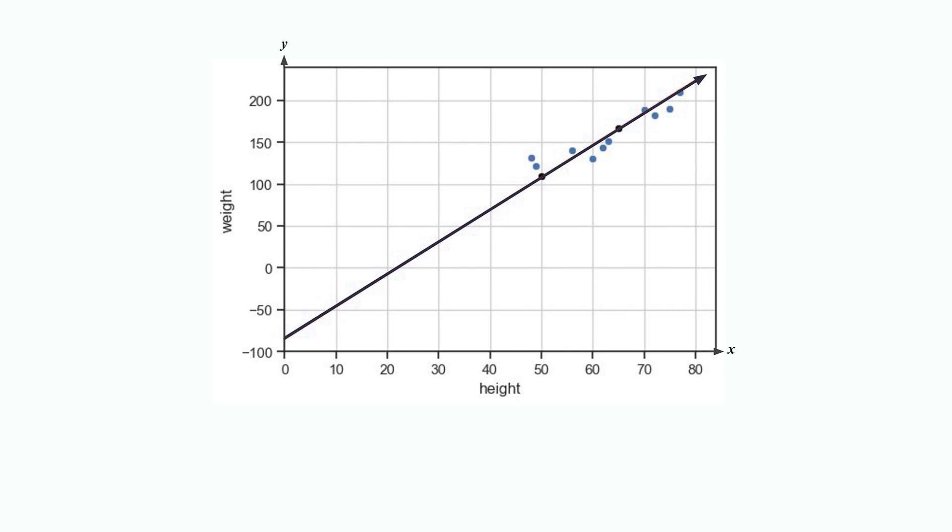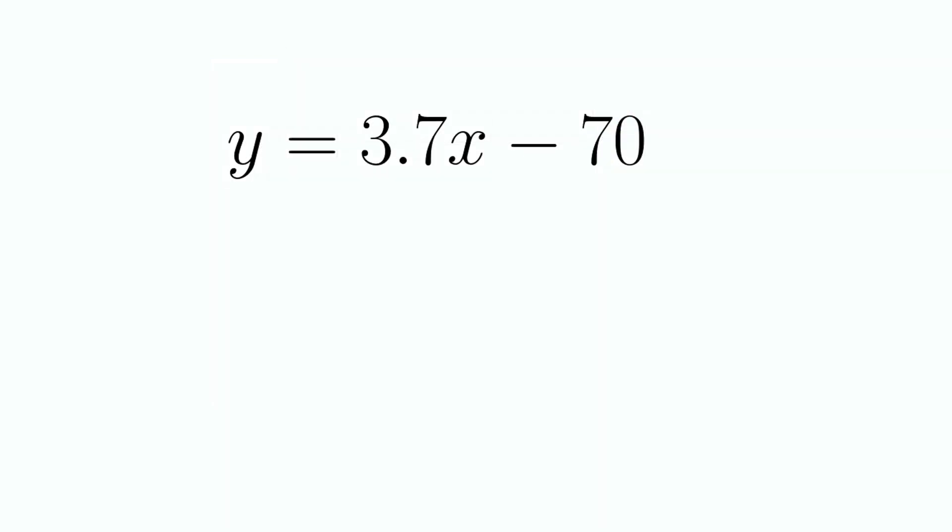In our data set, we don't have a measurement for anyone that is 65 inches tall. We can use our linear model by plugging 65 in for x and then calculating y. Now, even though this method works, there are a few problems.